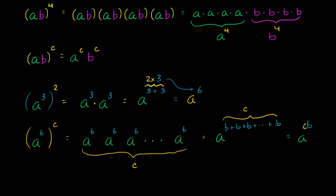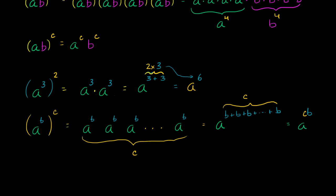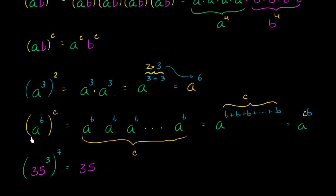So very useful. If someone were to ask: what is 35 to the third power, and then that raised to the seventh power? Well, this is obviously going to be a huge number, but we can simplify the expression. This is equal to 35 to the product of those two exponents — 35 to the three times seven, or 35 to the 21st power.